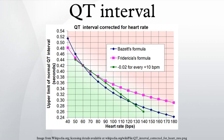However, this nonlinear formula, obtained from data in only 39 young men, is not accurate and over-corrects at high heart rates and under-corrects at low heart rates. Fredericia has published an alternative correction formula using the cube root of RR. There are several other methods, such as regression analyses.